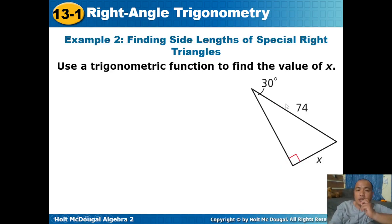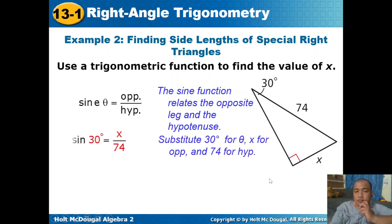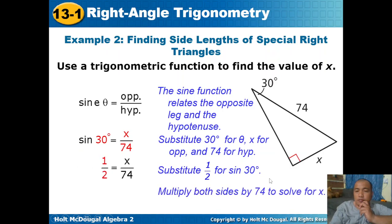Finding side lengths of special right triangles — use a trigonometric function to find the value of x. If this angle is 30 degrees, then the other is 60 degrees, making it a 30-60-90 special triangle. The hypotenuse is 74. The shorter leg is opposite the 30-degree angle. Using sine: sine 30 degrees equals x over 74. Since sine 30 degrees is 1 over 2, we get 1 over 2 equals x over 74. Cross-multiplying: 74 equals 2x, so x equals 37.